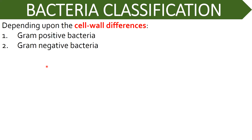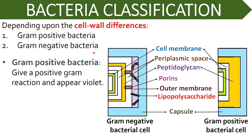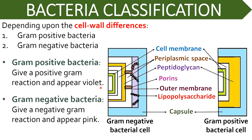Now let us study the classification of bacteria. Based on differences in the cell wall, bacteria are broadly classified into two major groups: gram-positive bacteria and gram-negative bacteria. Gram-positive bacteria give a gram-positive reaction upon gram staining, meaning they retain the color of the primary stain, crystal violet, due to their high peptidoglycan content in the cell wall, and as a result they appear violet in color. Gram-negative bacteria give a gram-negative reaction — they lose the color of crystal violet and take up the color of the counter stain, safranin, due to their low peptidoglycan content and high lipid content in the outer membrane, and as a result they appear pink in color.